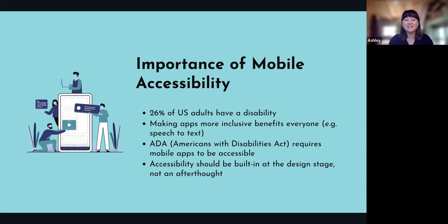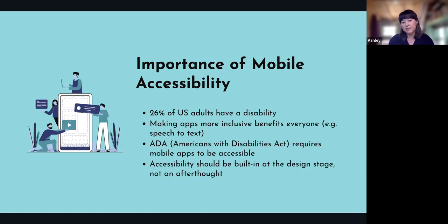I firmly believe that accessibility should be built in at the design stage. Too often you get to the end of developing an app and that's when people start thinking about accessibility. Obviously if you start at the design stage, you can fix all of those errors coming up and not have it just be an afterthought where you have to fix a bunch of things during testing.